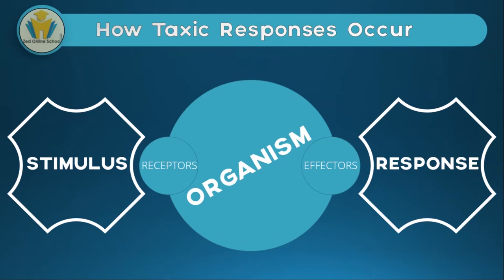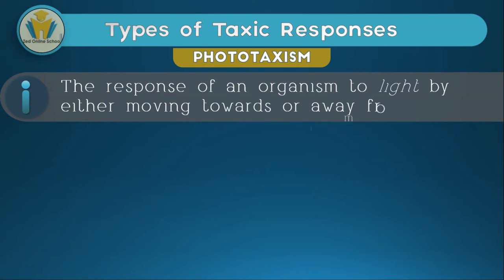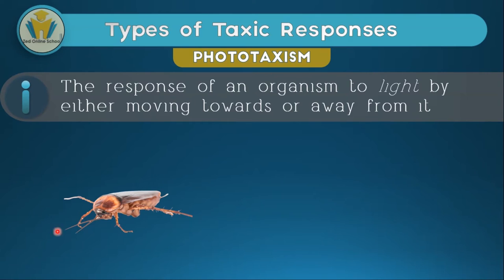Now let's look at the different types of taxis responses. The first one is phototaxism, which is the response of an organism to light. The organism will either move towards or away from light. If it moves towards, it will be positive taxism — specifically positive phototaxism. As you can see, there's a cockroach here. The cockroach shows negative phototaxism. If a light is switched on where cockroaches are in a dark place, the cockroaches will move away and hide, because cockroaches show negative phototaxism.